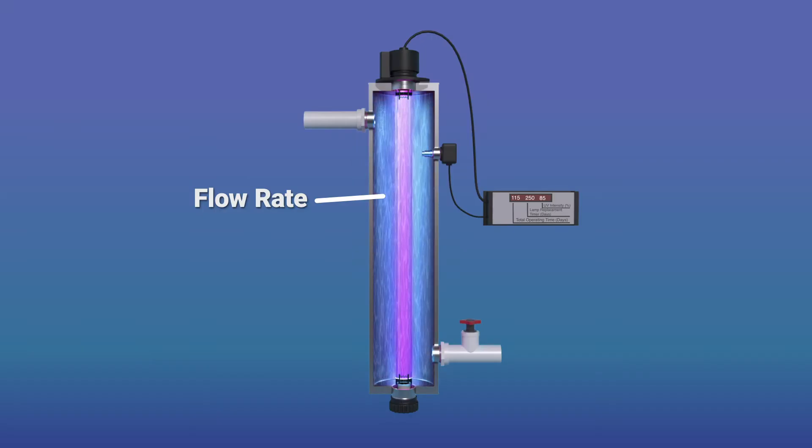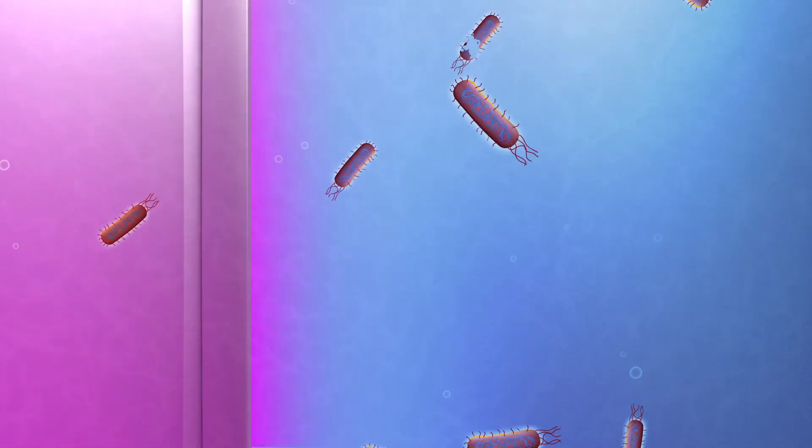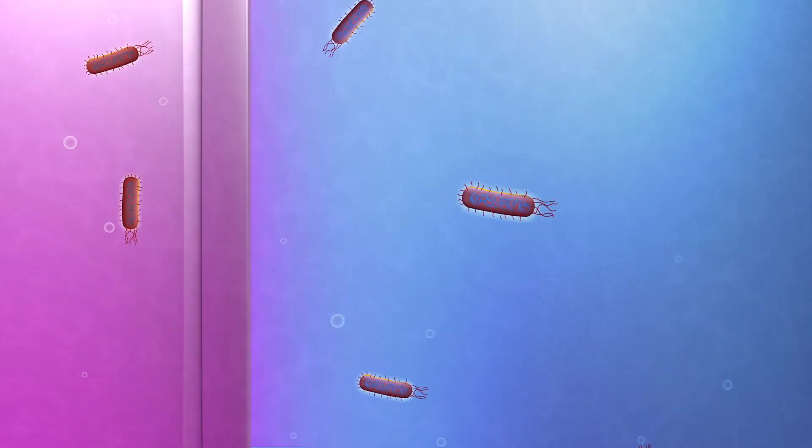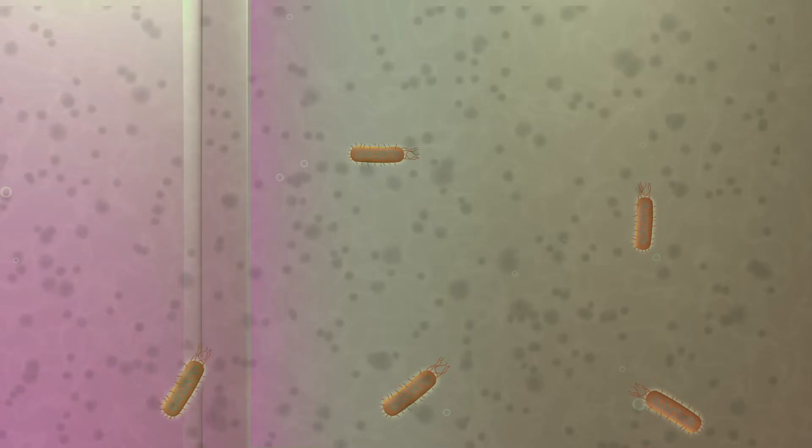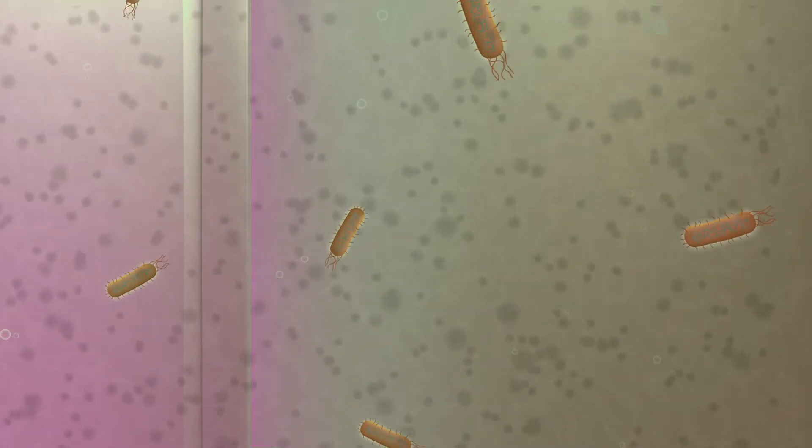Because cells have to be exposed to enough light, it's important to control flow rate and make sure all water is exposed for enough time. If water flows too quickly, UV light can't disinfect it. If water is too dirty or turbid, the UV light won't be able to pass through to work properly.